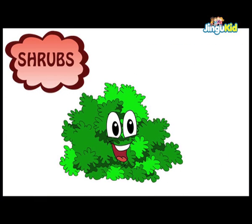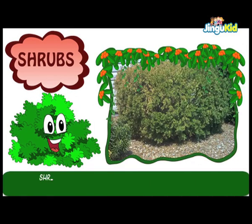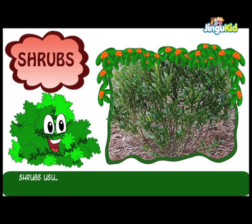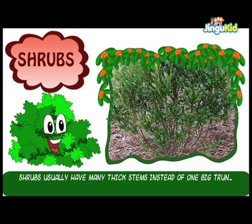Shrubs. A shrub is a woody plant of lower height than a tree. Shrubs usually have many thick stems instead of one big trunk.